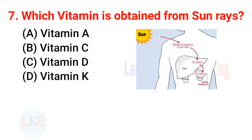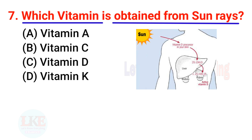Question number 7: which vitamin is obtained from sun rays? The right answer is option C: Vitamin D.